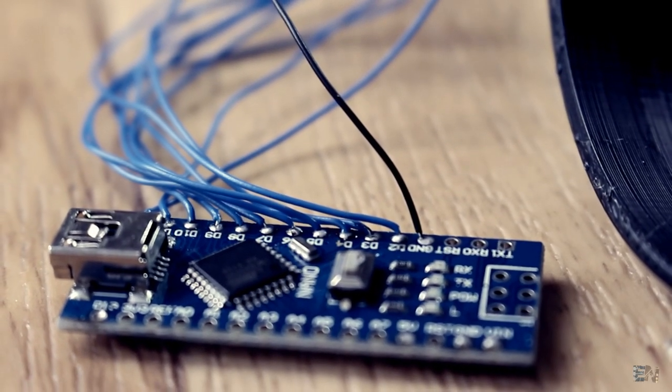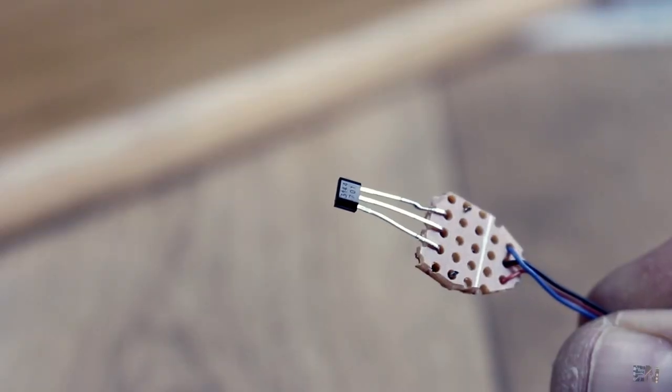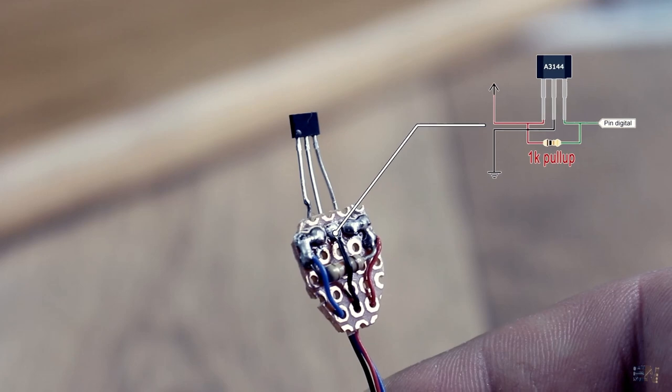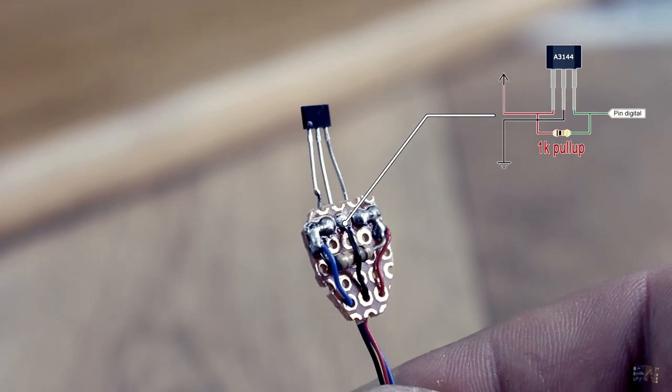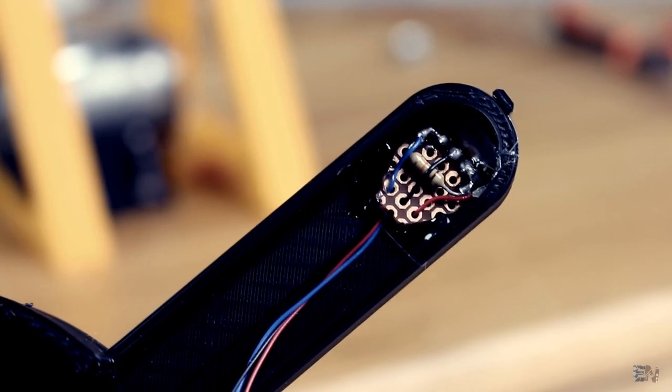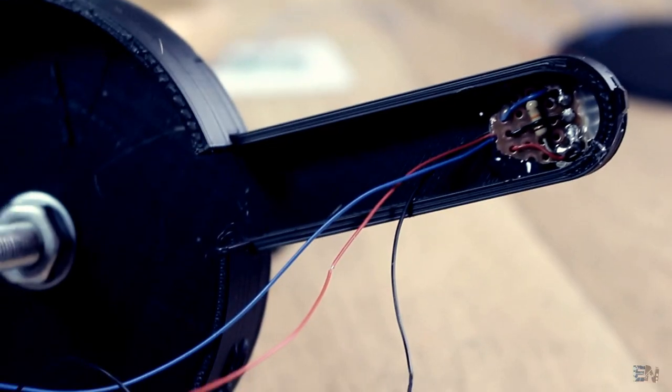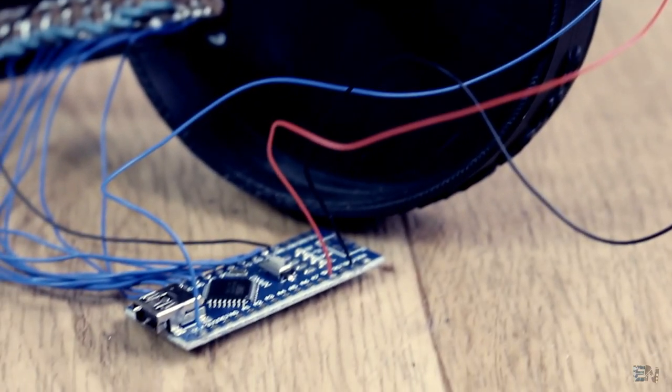Now, on a separated smaller PCB, I solder in place the hall sensor with a pull-up 1K ohm resistor between 5V and the signal pin, and solder 3 wires for 5V, ground and signal. I glue the hall sensor PCB on the other side of the propeller, with the sensor on the outside of the propeller.